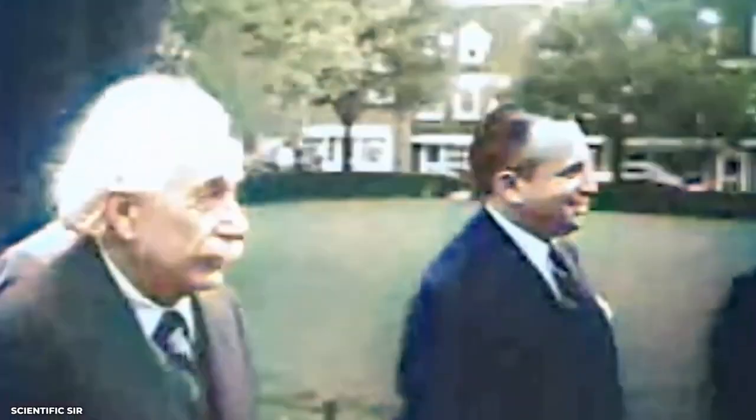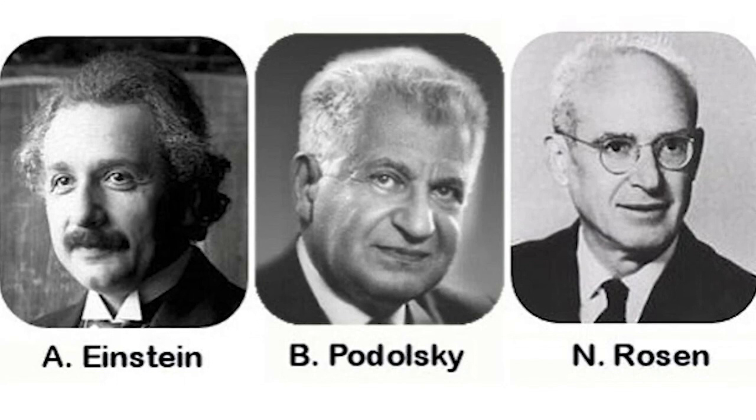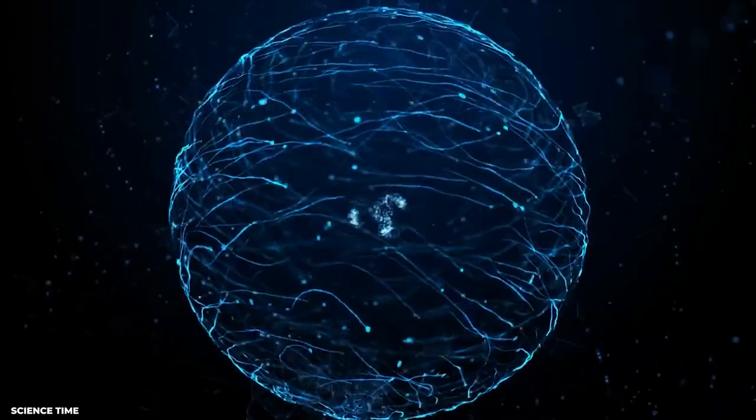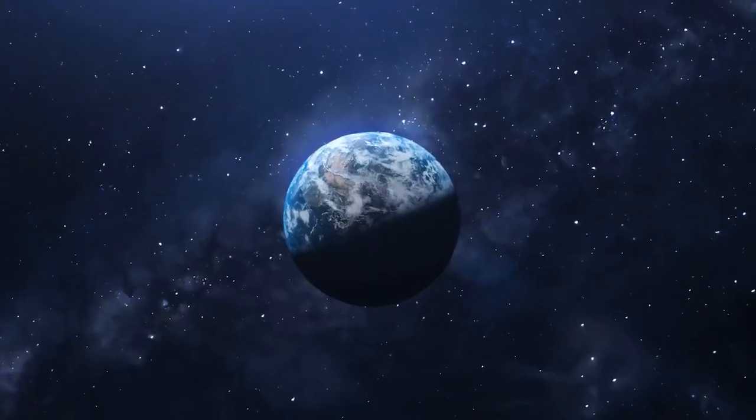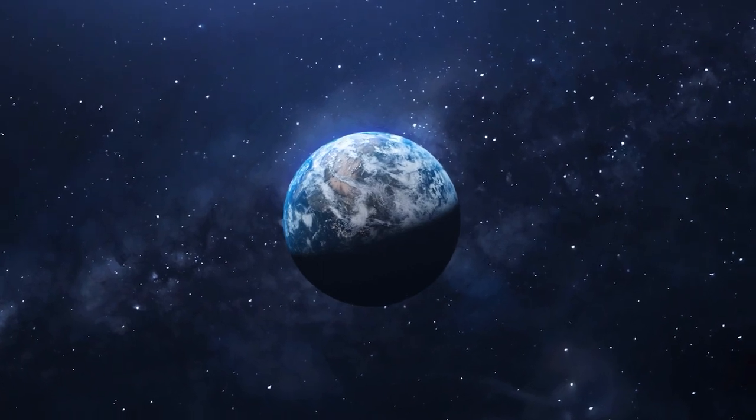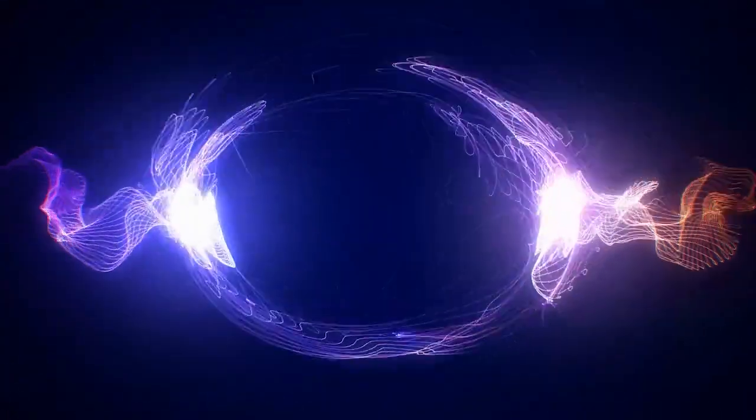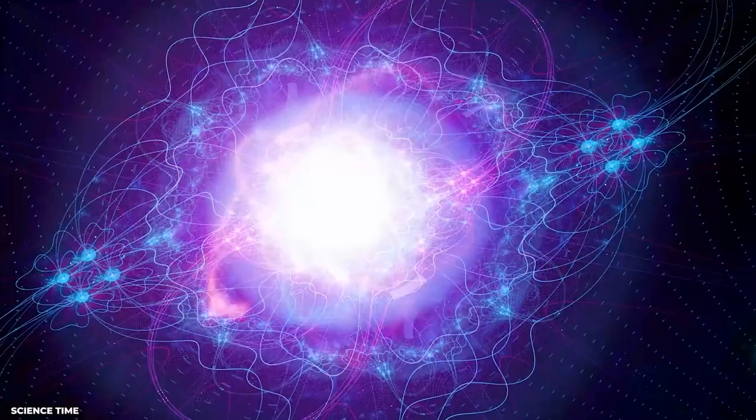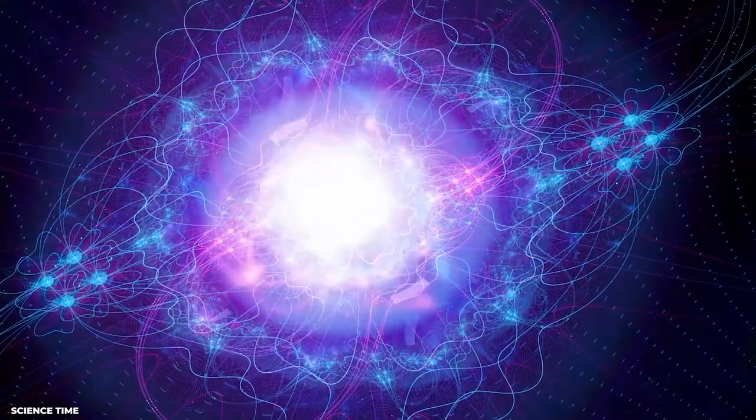The concept of quantum entanglement was introduced in 1935 by Albert Einstein, Boris Podolsky, and Nathan Rosen in their famous EPR paper. The paper argued that quantum mechanics could not be a complete theory of the physical world because it allowed for spooky action at a distance. Essentially, they believed that if two particles were entangled and one was observed, the other would instantly know what had been observed, regardless of the distance between them.